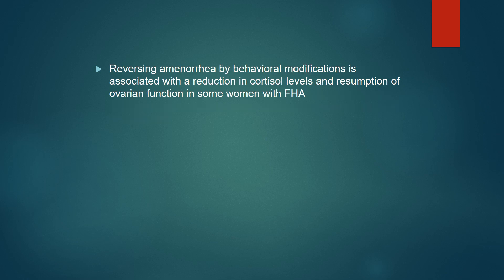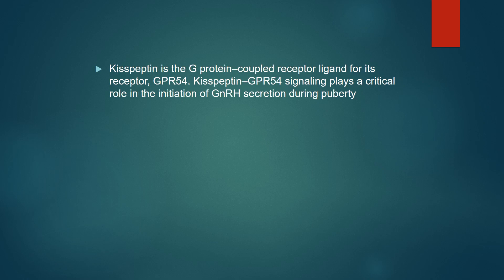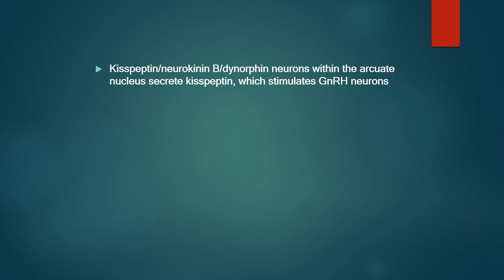Reversing amenorrhea by behavioral modification is associated with reduction in cortisol levels and resumption of ovarian function in some women with FHA. Kisspeptin is a G-protein coupled receptor ligand for the receptor GPR54; GPR55 signaling plays a critical role in initiation of GnRH secretion during puberty. Kisspeptin, neurokinin B, and dynorphin neurons within the arcuate nucleus secrete kisspeptin which stimulates GnRH neurons.